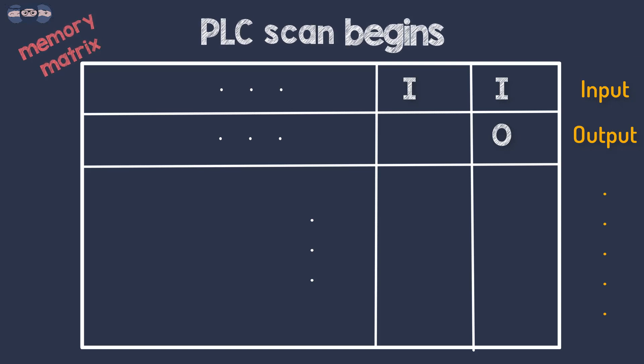The next number indicates the byte, followed by the bit. I 0.0 indicates the 0th byte and the 0th bit. I 0.1 indicates the 0th byte and the first bit, and so on. We will discuss this in detail in the next few episodes.